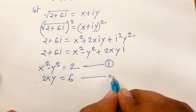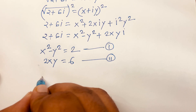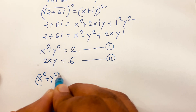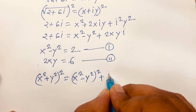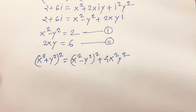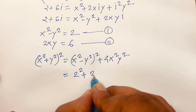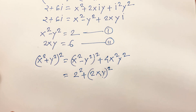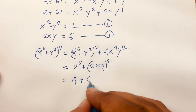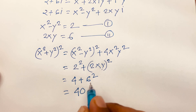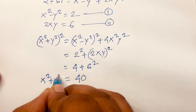Now we find x² + y² using the identity: (x² + y²)² = (x² - y²)² + (2xy)². Substituting: (x² - y²)² = 2² = 4, and (2xy)² = 6² = 36. So (x² + y²)² = 4 + 36 = 40.